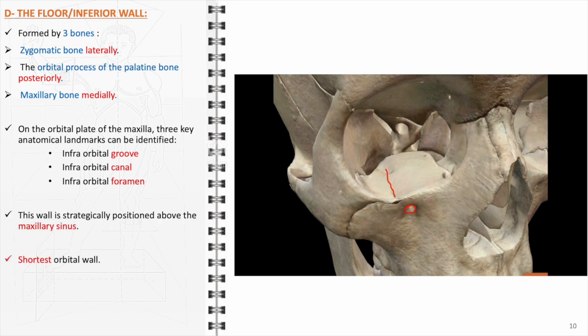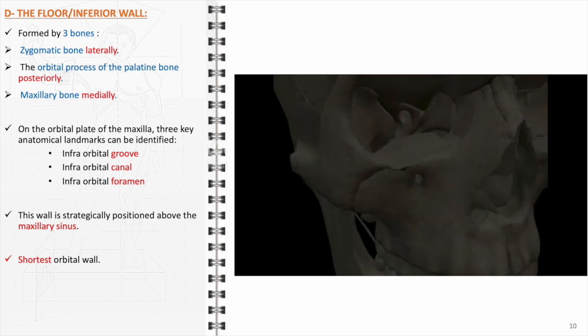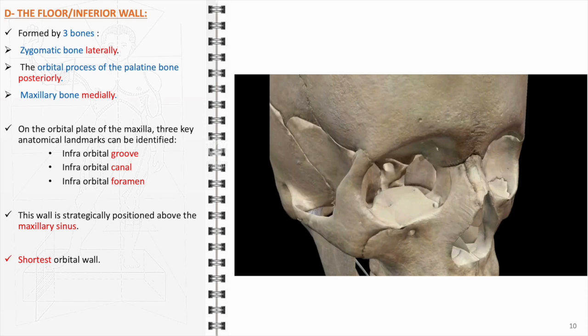These structures are crucial for sensory innervation and blood supply to the mid-facial region. A significant aspect of the floor of the orbit is its positioning directly above the maxillary sinus. This proximity is clinically significant, as trauma to the orbital floor can lead to communication with the maxillary sinus — a condition known as an orbital blowout fracture. The floor of the orbit, being the shortest among the orbital walls, plays a crucial role in the distribution of forces within the orbit.